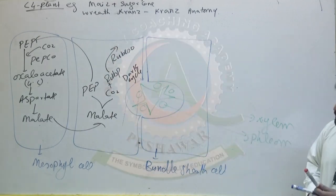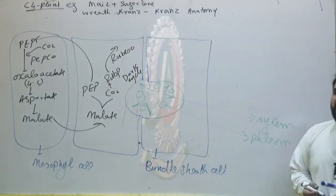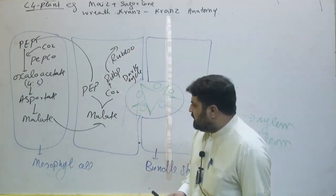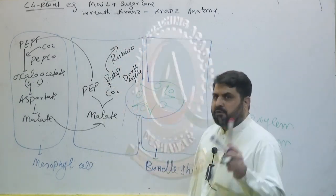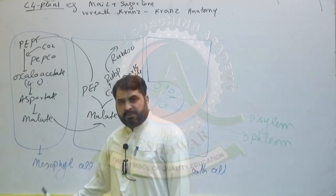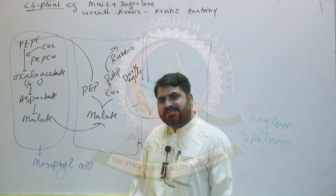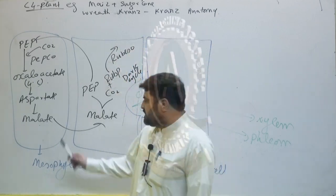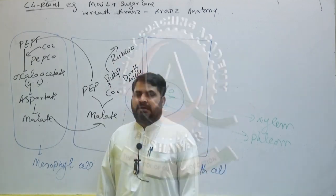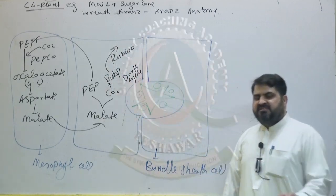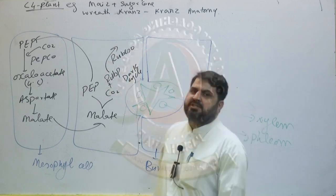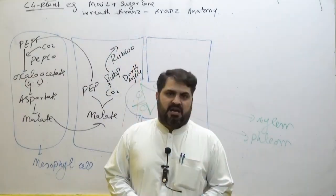To summarize C4 plants: the first stable compound is oxaloacetate (four carbons); the dark cycle occurs in bundle sheath cells; RuBisCO enzyme is present in bundle sheath cells; PEPCO enzyme is present in mesophyll cells; PEPCO is only sensitive to carbon dioxide and insensitive to oxygen; and there is no photorespiration in C4 plants — that is why these plants protect themselves from photorespiration. That concludes today's lecture. Best of luck, see you next time.